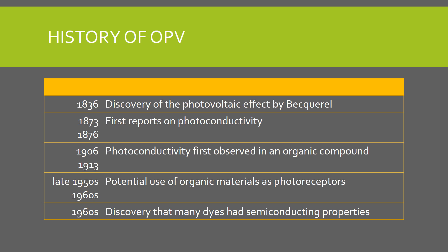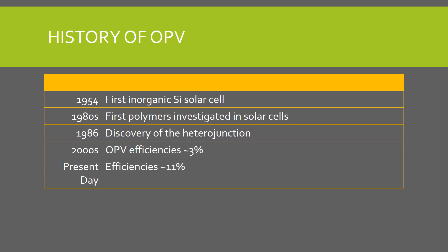Most of the history behind organic photovoltaics, and indeed photovoltaics in general, lies in the 20th century, but most of the physics behind solar cells was established in the 19th century. Becquerel is generally attributed with the discovery of the photovoltaic effect in 1836 — the effect in which certain materials develop a current under illumination from light. In the 1870s, the first reports of photoconductivity were made, the phenomenon in which certain materials become more conductive under illumination. In the early 20th century, photoconductivity was first observed in an organic molecule, anthracene. It wasn't until the 50s and 60s that organic materials were identified as potential photoreceptors, marking them as candidates for converting light into signals. In the 60s, it was discovered that many common dyes had semiconducting properties. The first inorganic cell was made in 1954 by Bell Laboratories — a silicon cell with 6% efficiency.